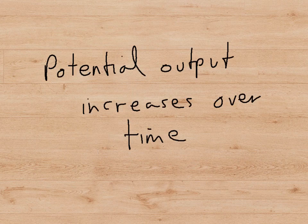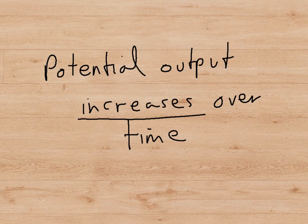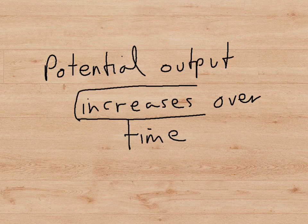Now, we can go on to talk about what happens to the potential output over time. In fact, the potential output of any economy increases over time because the number of workers may be increasing. There may be a high birth rate or there may be immigration. And the efficiency of the workers increases as they become more educated and trained. The capital stock of the economy also increases as we build up our stock of machines. And also, we may discover new natural resources. So, over time, we believe that the potential output of an economy actually goes up.